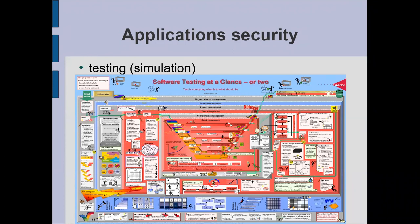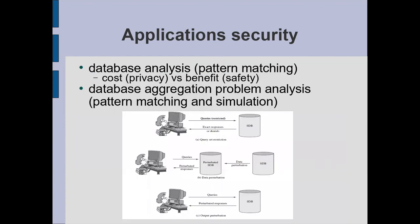In terms of application security, testing of our increasingly complex applications is a non-trivial task, and quantum computers will definitely be able to assist us and give us better information. Database analysis — the pattern matching capabilities will help us, and looking at differential privacy, the cost of privacy versus the benefit of safety, and some of those calculations — database aggregation problem analysis. The privacy budget, privacy accounting calculations that differential privacy is meant to address will be very complex, and quantum computers are probably going to be an area that will assist us there.